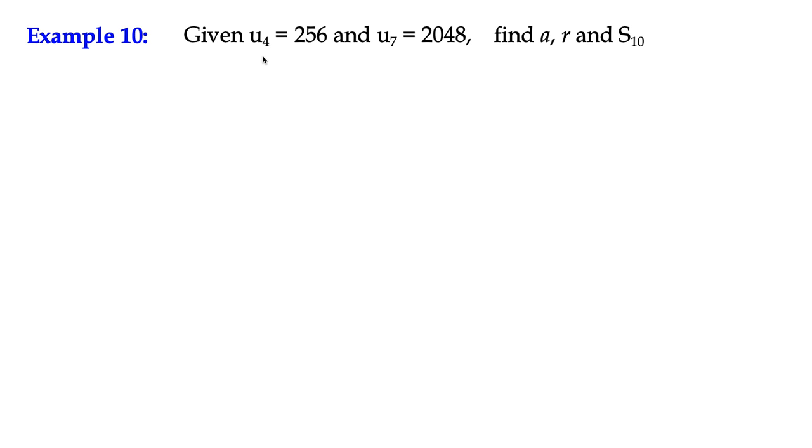In this question, we're told that U4, the fourth term in a series, is 256, and U7, the seventh term, is 2048. Find a, r, and S10. It should probably have stated that it is a geometric rather than an arithmetic sequence, but we'll imply that at the moment.